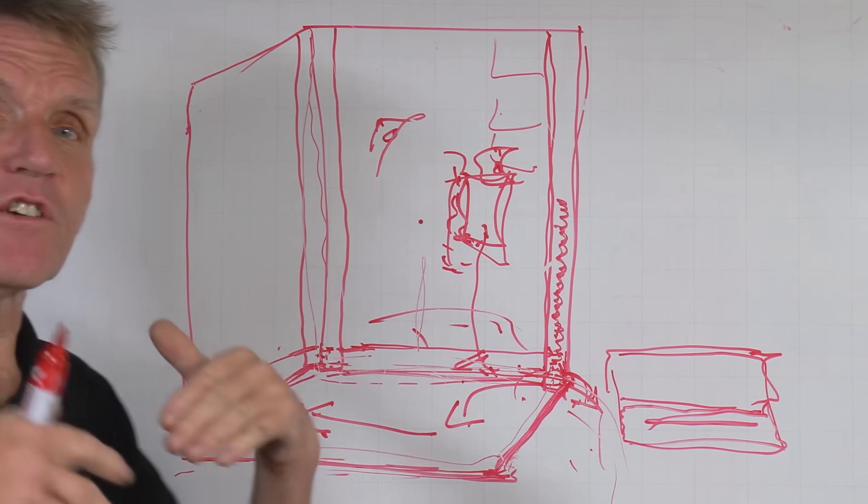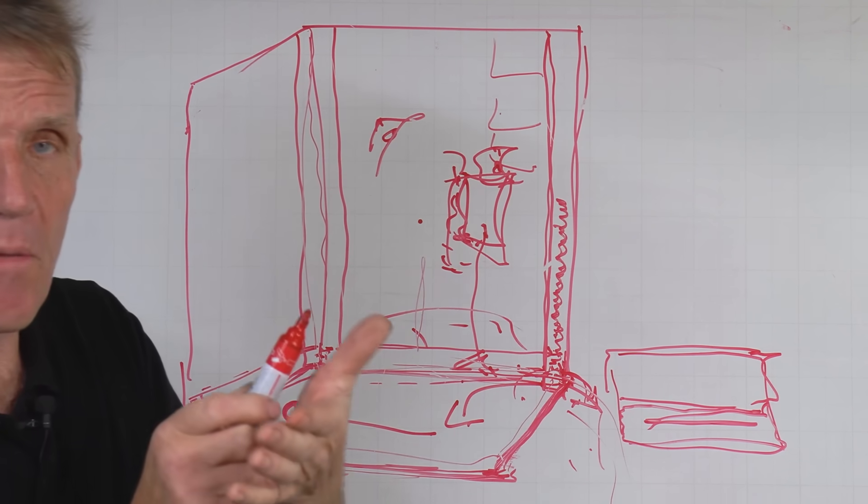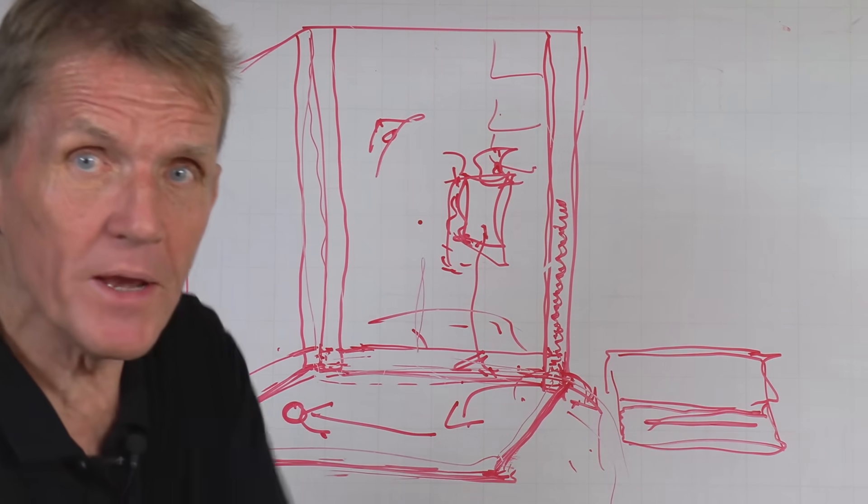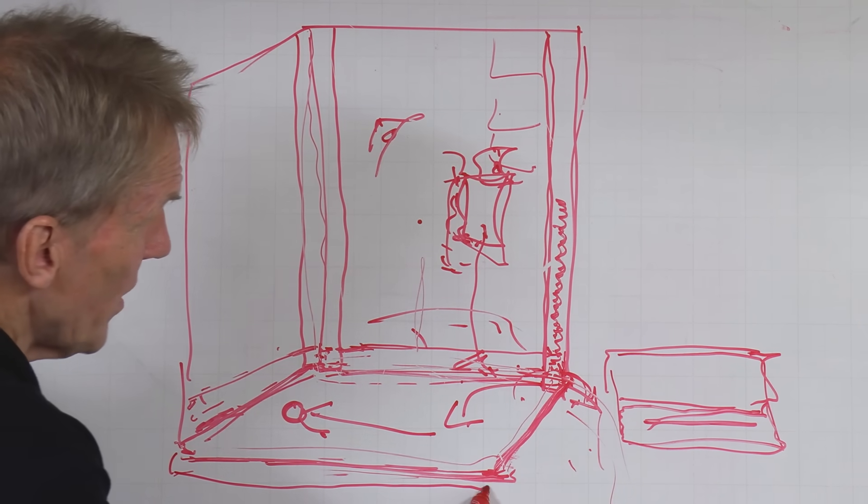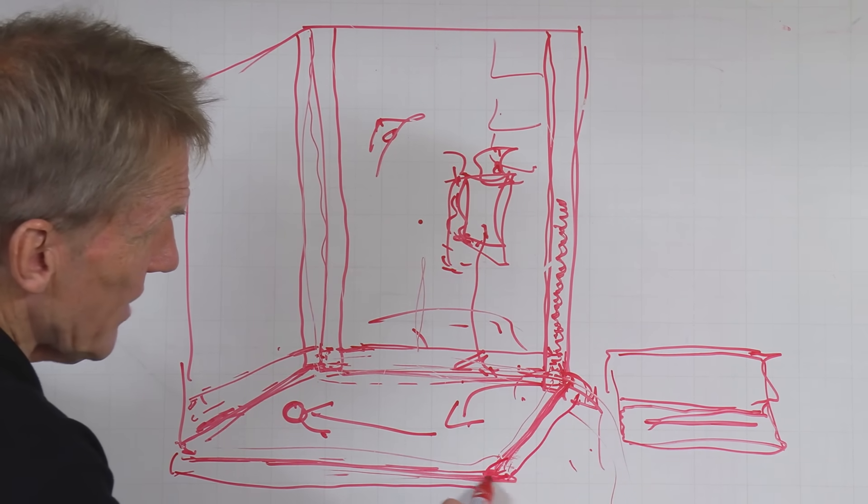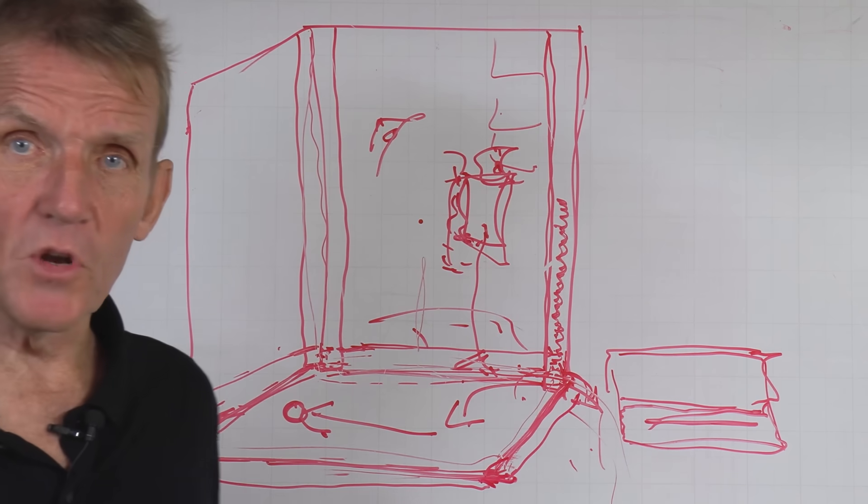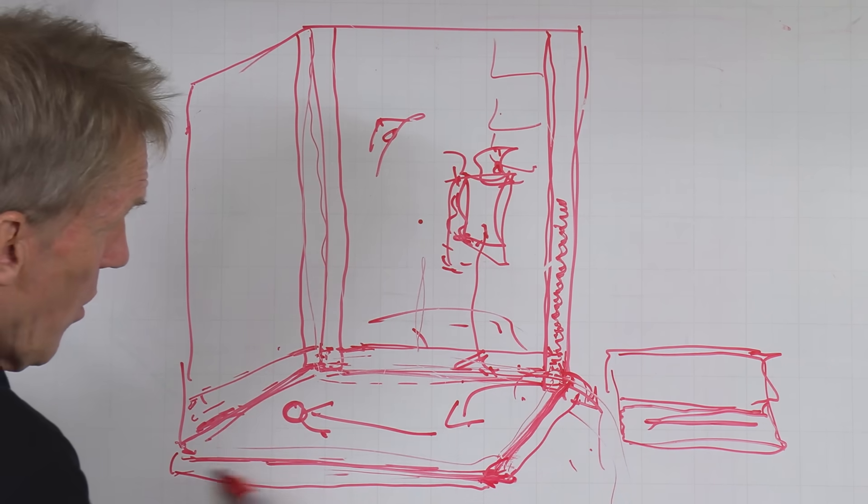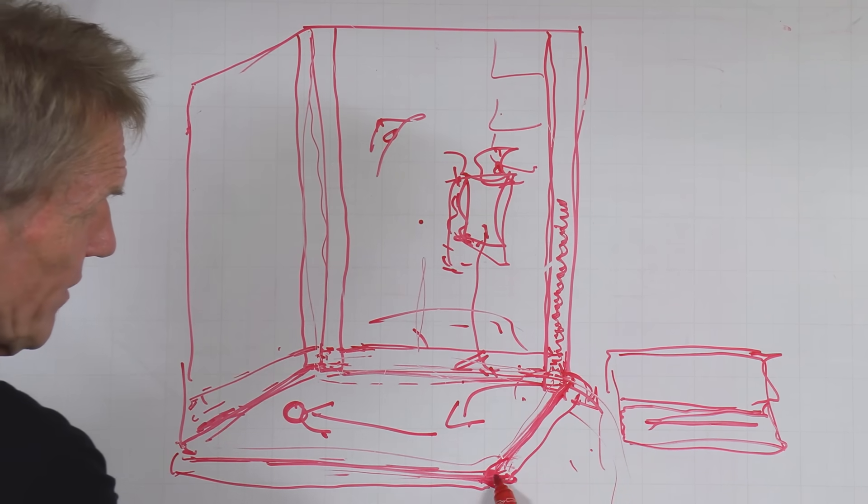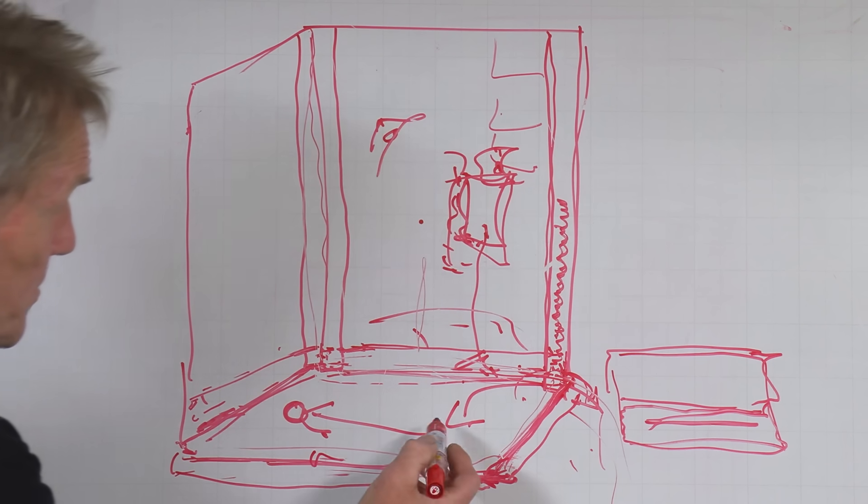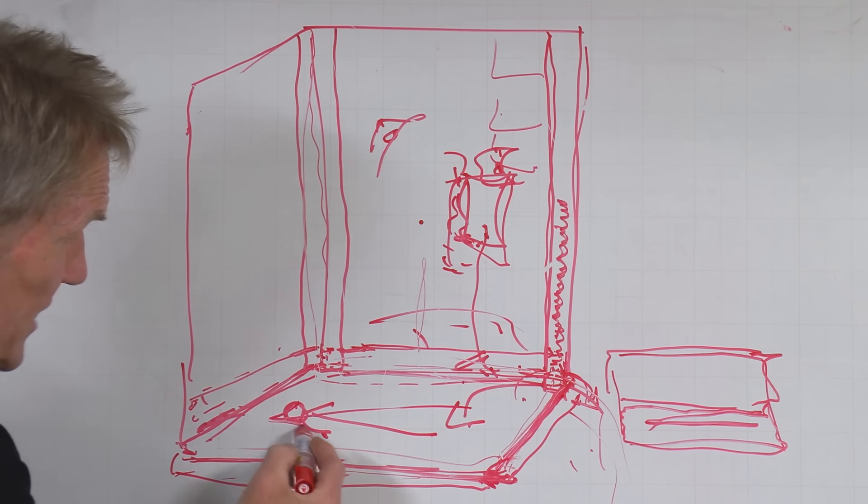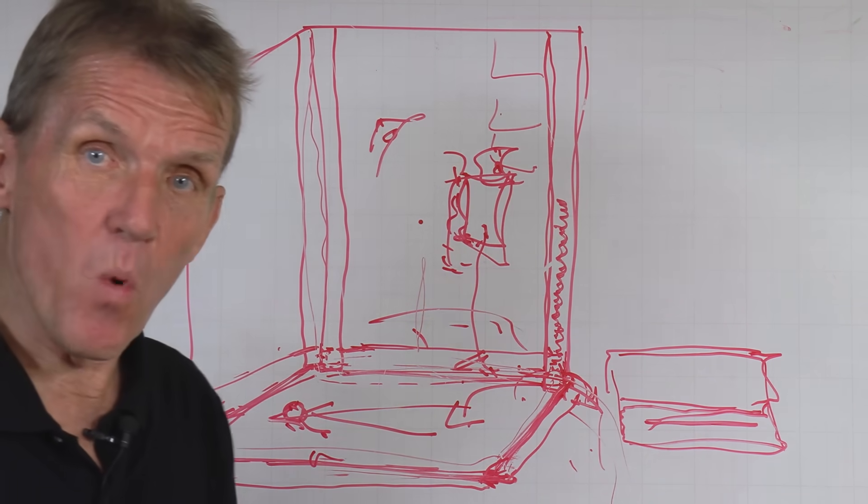But if it's a tray which is a foam back tray and it says you can bed it on tile adhesive, by all means go ahead and bed it on tile adhesive. But be careful when you do that, that the shower tray is properly supported and of course level on all sides. In other words, you put the spirit level along the edges, it's got to be level there. The fall on the tray is built into the tray so it will naturally run to wherever the waste hole is.